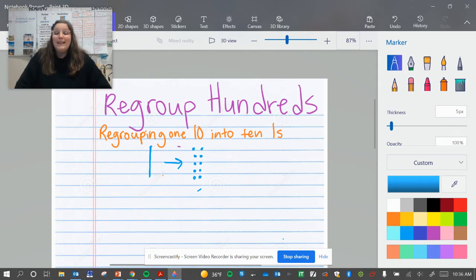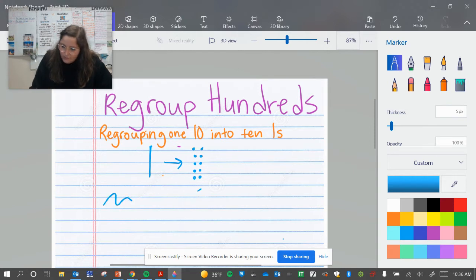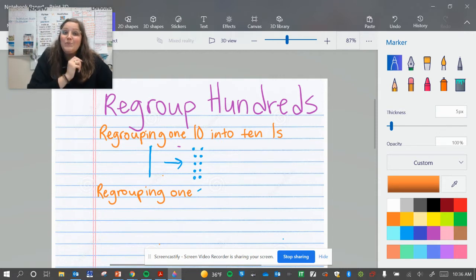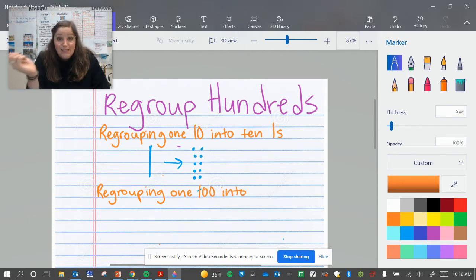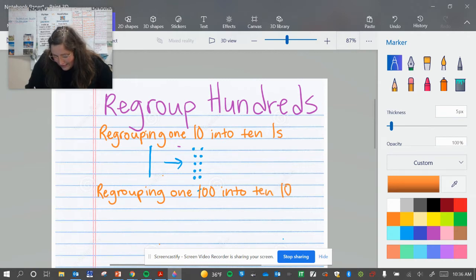Let's talk about what happens when I get to the tens place and I don't have enough, if I have more on the floor. Let's look at what that looks like. So let's write regrouping 1 hundred into what? If I don't have enough tens, I need to change it into tens. How many tens are in 100? 10 tens are in 100. So I can say into 10 tens.